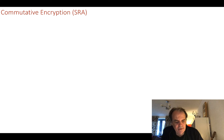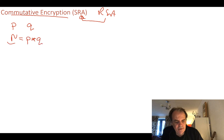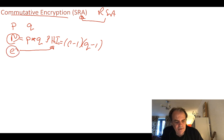There are methods that give us commutative encryption automatically or by modifying an existing method. We're all familiar with RSA; we can modify it to become the Shamir-Rivest-Adleman (SRA) method. With RSA we have two prime numbers P and Q, calculate N = P × Q as our modulus, then calculate phi = (P−1)(Q−1), and pick a value E that doesn't share a factor with phi.